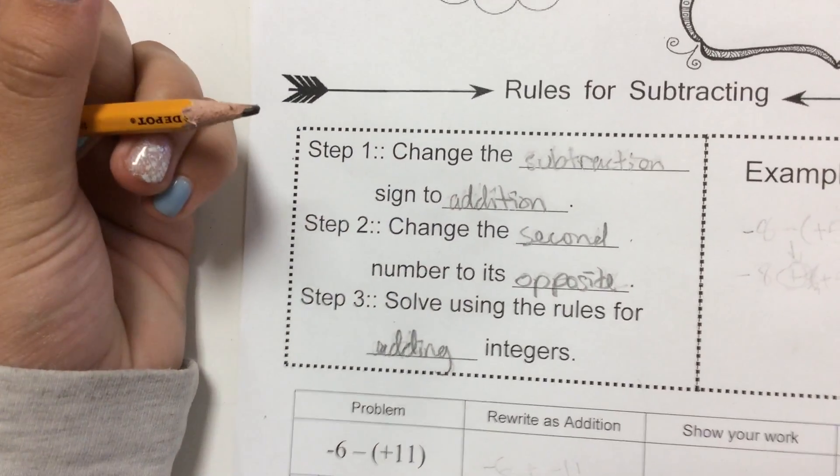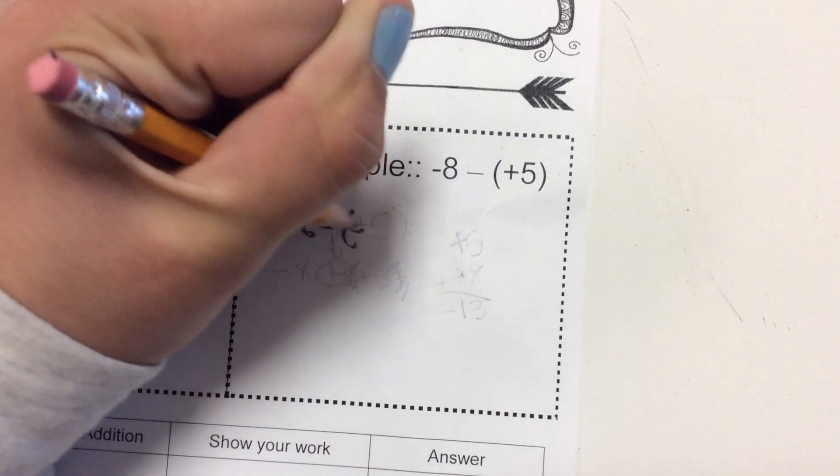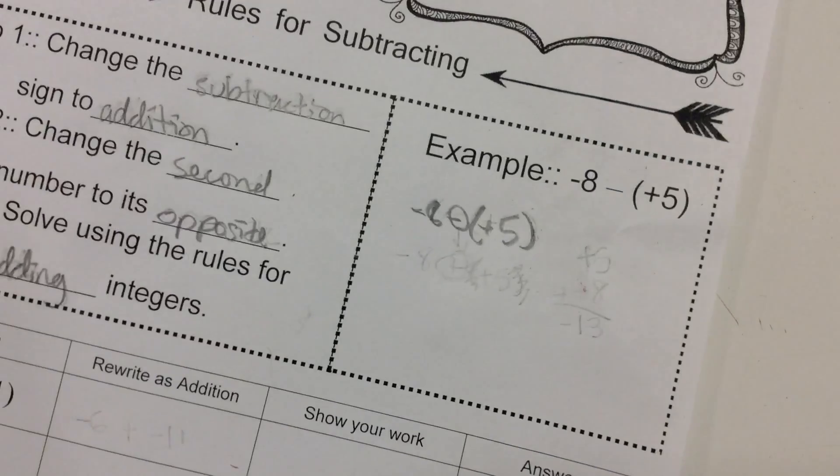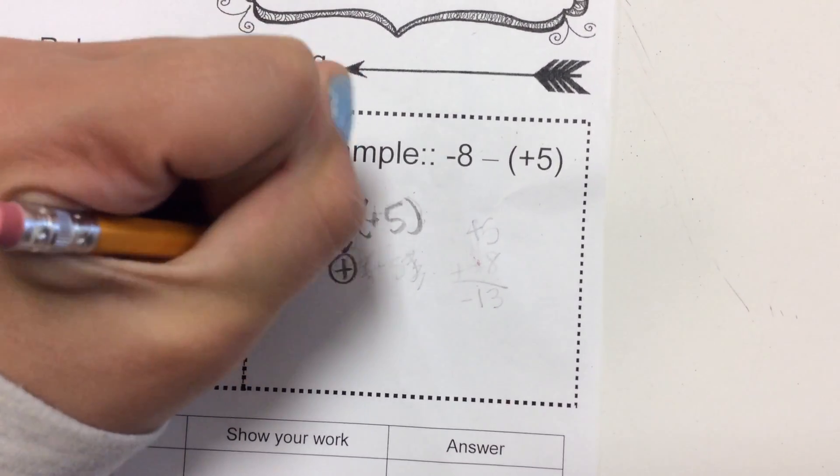And then, I'm going to do an example in case you didn't understand that. So, you're just going to rewrite the problem. But remember our first step over here is changing it to addition. So, we're going to change it to addition.